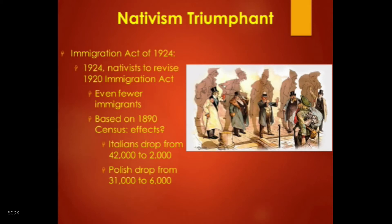In the 1920s, the United States was relatively prosperous but divided between old-stock Protestant small-town America and immigrant-stock Catholic big-city America. These divisions were reflected in the 1924 Immigration Act. The nativists were still immensely powerful, and the Klan was at the height of its influence at that time.